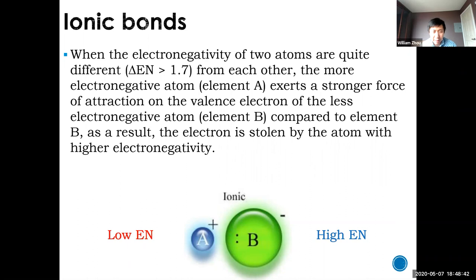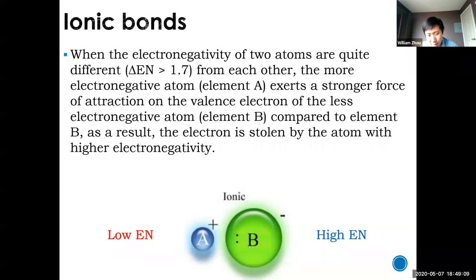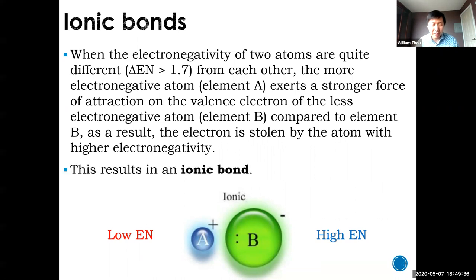For an ionic bond, the difference must exceed 1.7. When this occurs, the attraction of electrons from one atom greatly exceeds the other, so those electrons are stolen by the atom with higher electronegativity. This is not sharing anymore — if you straight-up steal electrons, you can't call it sharing. That's ionic, not covalent. It all comes down to force of attraction — electronegativity.